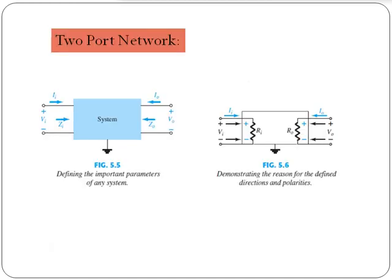Before getting into the AC analysis, we need to understand what a two-port network is. A two-port network consists of an input port and an output port, and the network is characterized by two currents — the input current and the output current — and two voltages — the input voltage and the output voltage. The input current and output current are assumed to be entering into the network.